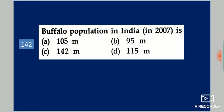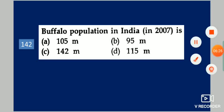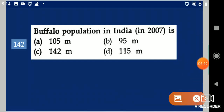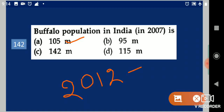Next question: Buffalo population in India in 2007 is dash. Your options are: 105 million, 95 million, 142 million, 115 million. Your answer is 105 million. Note: in 2012 it is 108.7 million, so remember this.